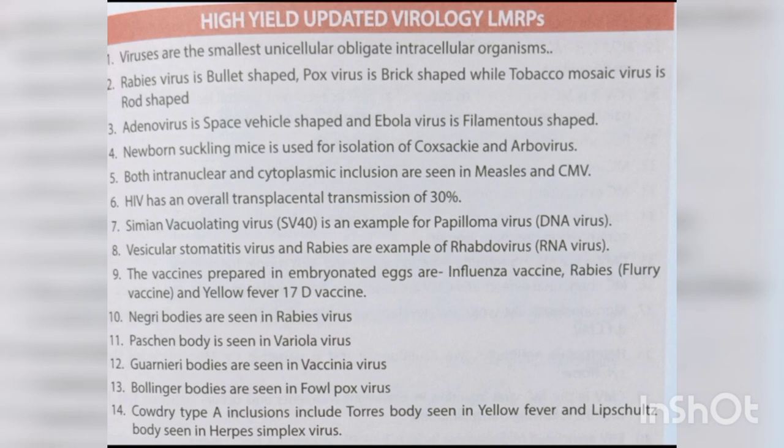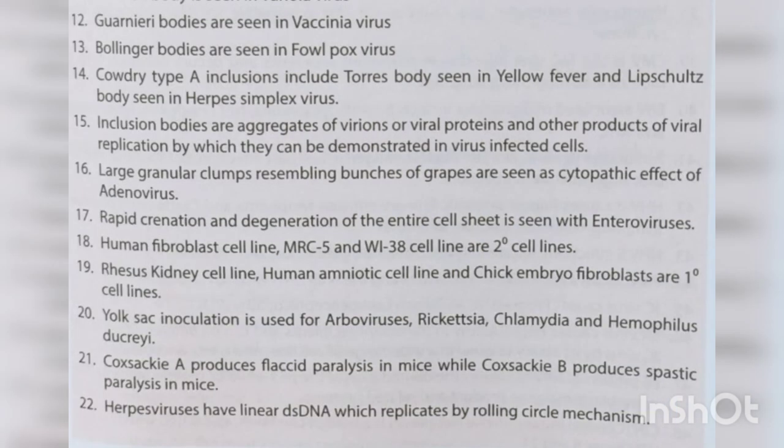Negri bodies — rabies virus; Paschen bodies — variola virus; Guarnieri bodies — vaccinia virus; Bollinger bodies — fowlpox virus. Cowdry type A inclusions include Torres bodies in yellow fever and Lipschütz bodies in herpes simplex virus. Inclusion bodies are aggregates of virions or viral proteins demonstrable in virus-infected cells.